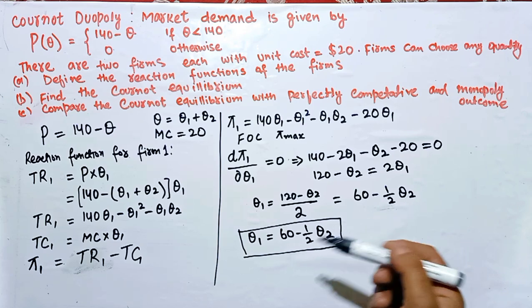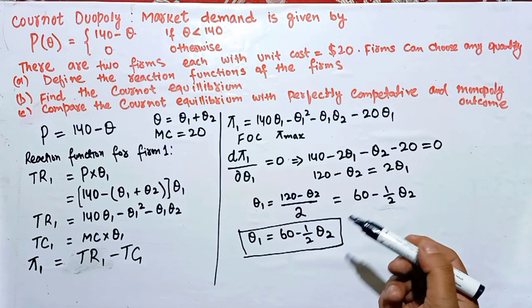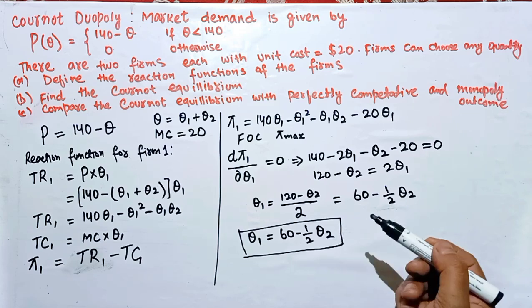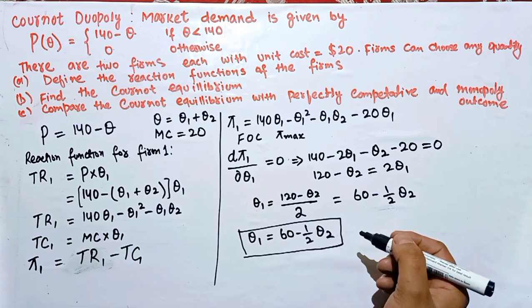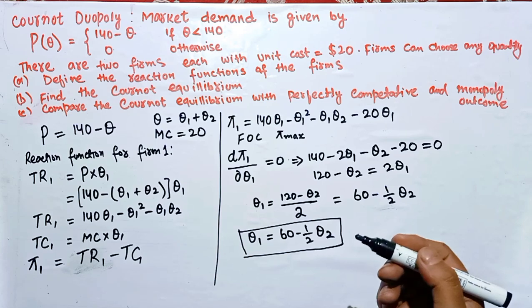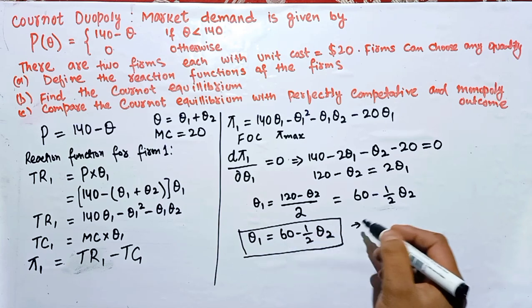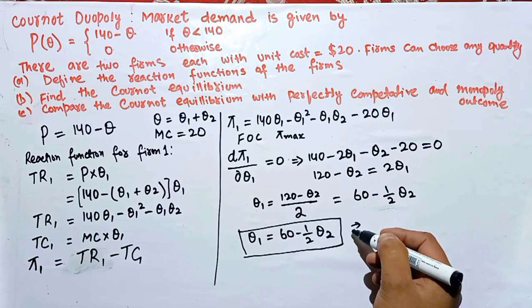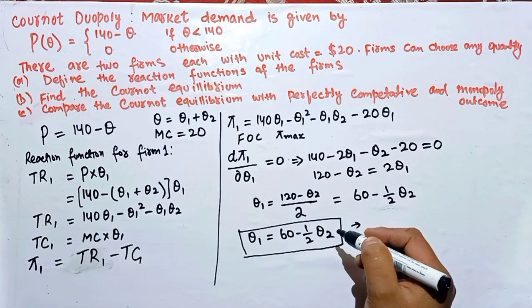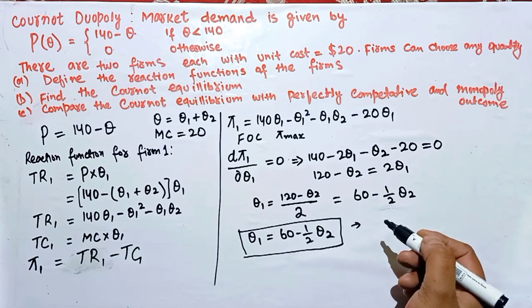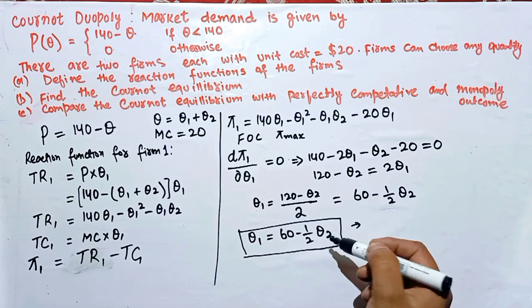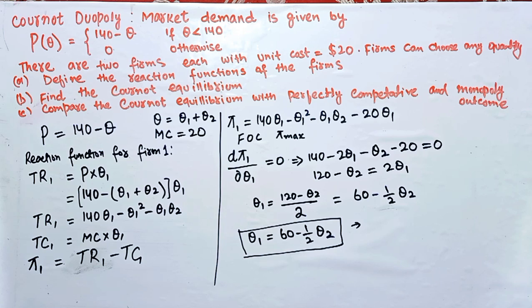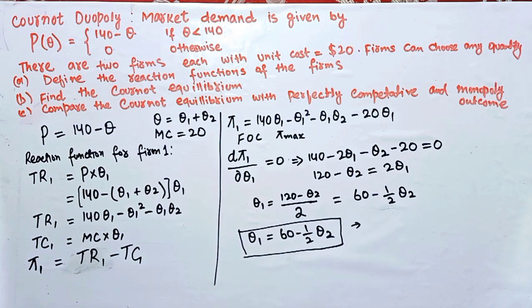The reaction function is simply the best response for Firm 1 in terms of output for any output level decided by Firm 2. In other words, it tells us how Firm 1 decides its output when Firm 2 changes its output. This is also called the best response curve or reaction function.